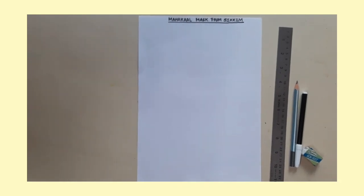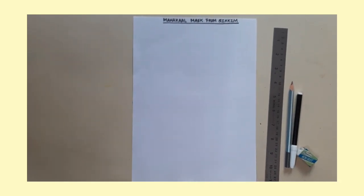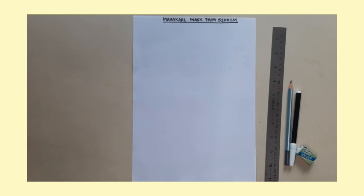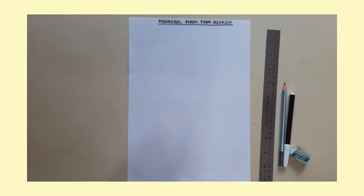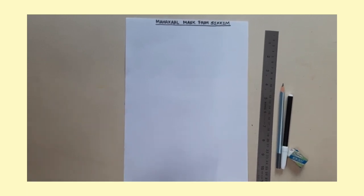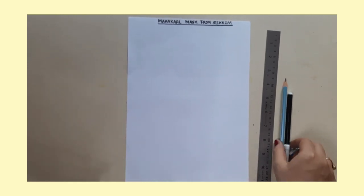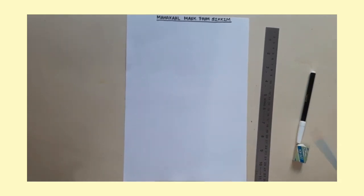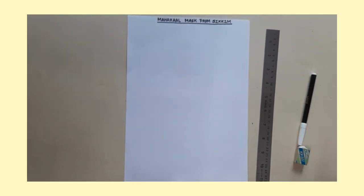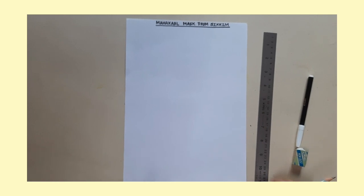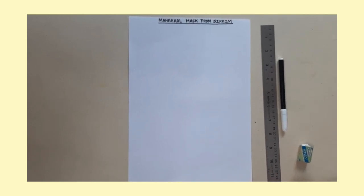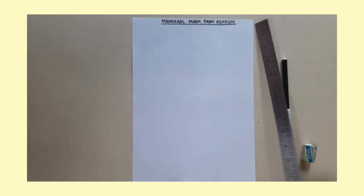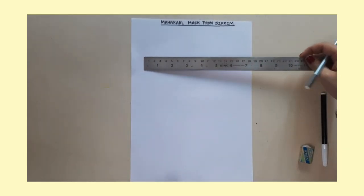Students, let's begin sketching the mask. I will teach you this mask with paper cutting later, but first you should know how to draw it. This is a Mahakal mask from Sikkim, which is made with different geometrical shapes. Once you understand how it is made with geometrical shapes, it's going to help you with your maths class. So first, learn how to draw.